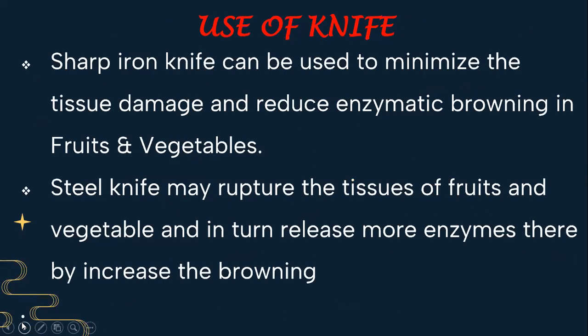Next is the common practice of using a sharp knife. A sharp iron knife can be used to minimize tissue damage and reduce enzymatic browning in fruits and vegetables. A steel knife may rupture the tissues of fruits and vegetables and in turn release more enzymes, thereby increasing the browning reactions.